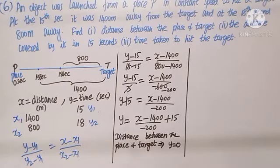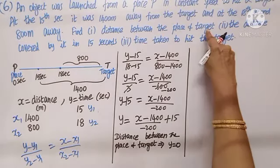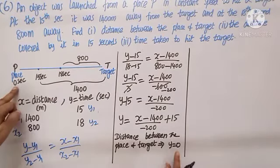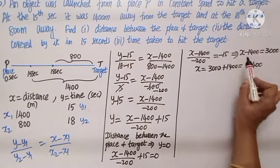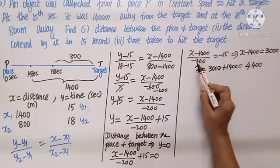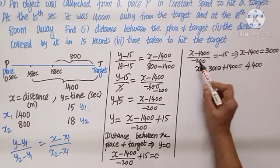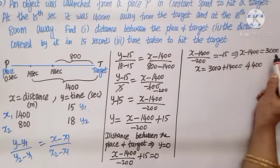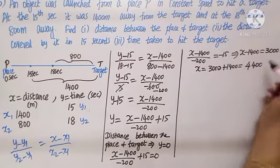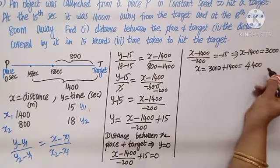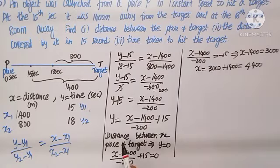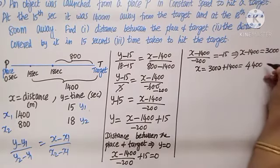To find the distance between the place and the target, put Y equals 0. We get X minus 1400 equals 200 times 15, which is 3000. So X equals 3000 plus 1400, giving X equals 4400 meters. The distance between the place and the target is 4400 meters.